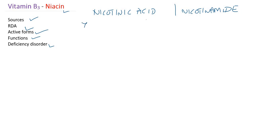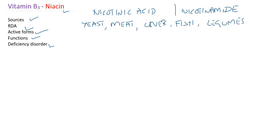The richest sources are usually dried yeast and meat, liver, fish, and legumes. These are some of the good dietary sources of niacin.